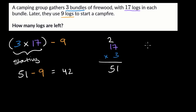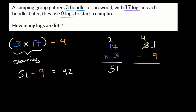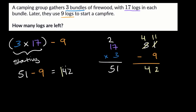If you wanted to do it using the traditional way, you could write 51 minus nine. You start in the ones place and say: I can't subtract nine from one, but I can regroup — take 10 from the tens place, leaving four tens. That one ten in the ones place becomes 10, plus the one already there makes 11. 11 minus nine is two, and four tens minus no tens is four tens: 42. So how many logs left? 42.